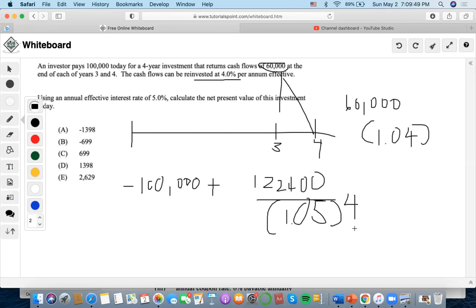Now let's solve. So we know that $122,400 times 1.05 to the negative four is $100,698.78. Let's subtract $100,000 from it, and then we'll end up getting $698.78, which makes C as the final answer.